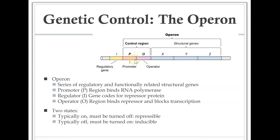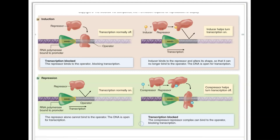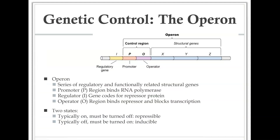To review: an operon contains a regulatory region and the genes themselves. Somewhere in the genome there's also a gene that codes for the repressor protein itself. That repressor protein binds to the operator and physically blocks RNA polymerase from moving past. Inducible systems are typically off and must be turned on; repressible systems are typically on and must be turned off.